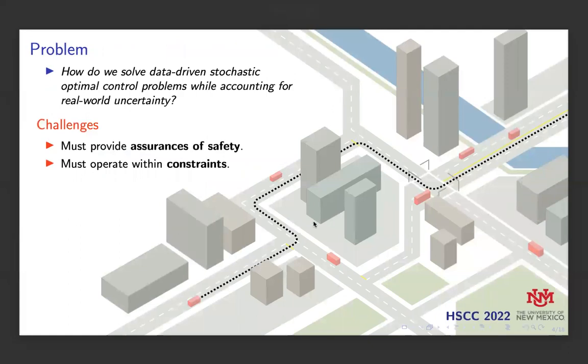So the question we ask is, how do we solve data-driven stochastic optimal control problems while accounting for real-world uncertainty? This is a difficult question because with data-driven solutions, we often don't have a lot of prior knowledge of the system dynamics, and we have to provide assurances of safety and enforce operating constraints without a strict mathematical model of the uncertainty.